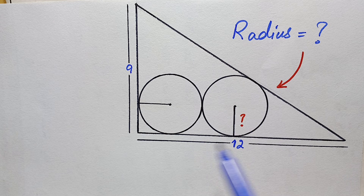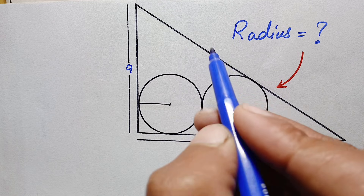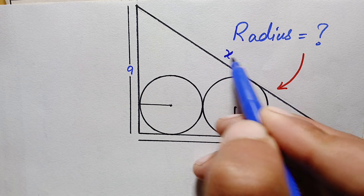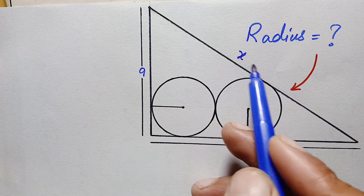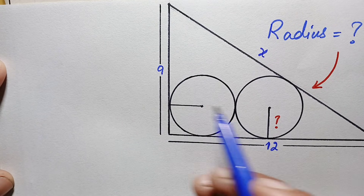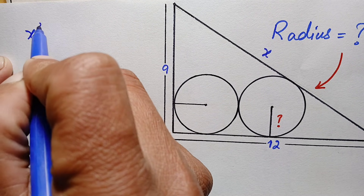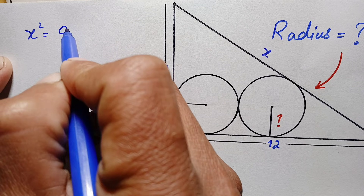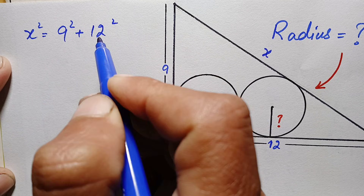First, we will find out the third side of the right angle triangle. Since this is a right angle triangle, we can apply the Pythagorean theorem. Let's suppose this third side is equal to x. By the Pythagorean theorem, the square of the hypotenuse is equal to perpendicular squared plus base squared. So we can write x squared equals perpendicular squared plus base squared.